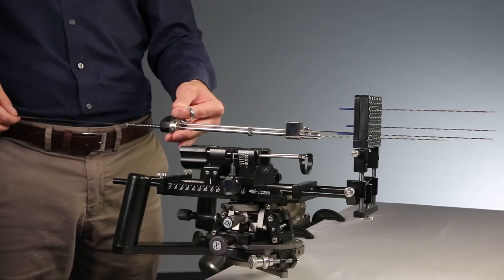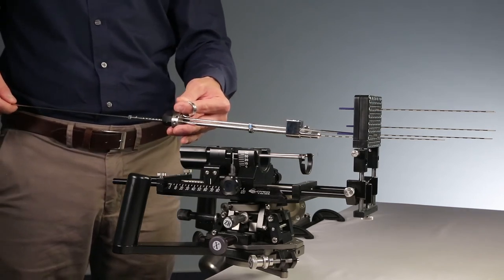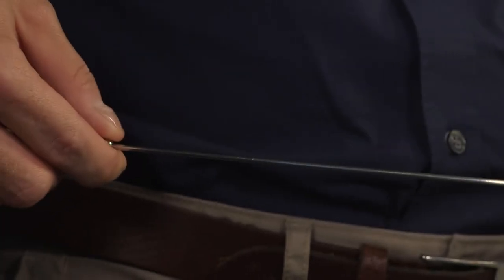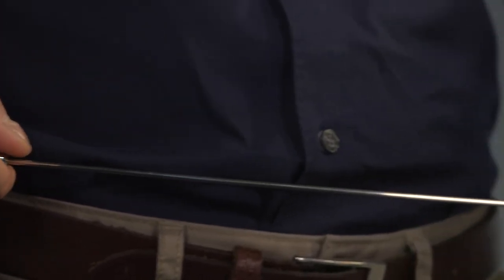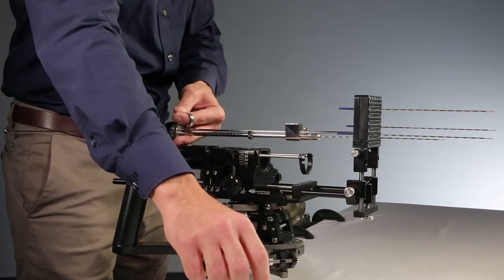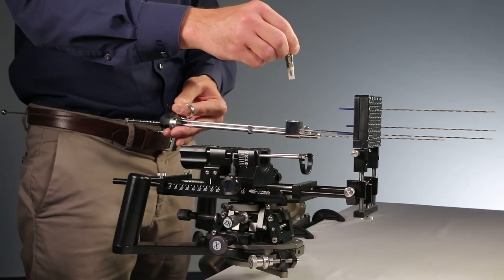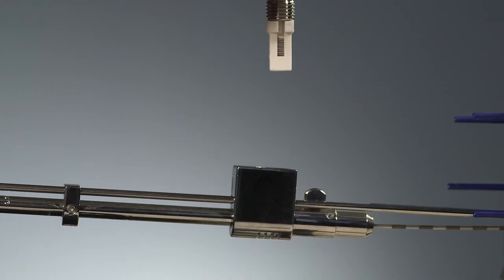Before loading the magazine with the seeds into the applicator, assure that the push wire rod is pulled out as far as possible. Then, insert the magazine loaded with seeds into the well of the magazine receptor. Please note that the seeds must face towards the right.